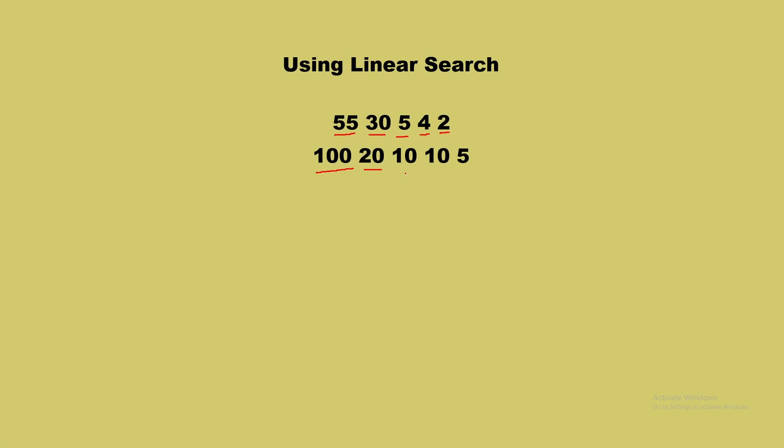A better approach comes from noticing that both arrays are sorted. Almost everyone knows that if an array is sorted, we can confidently apply binary search. In a sorted array, binary search finds an element in O(log n) time. So for each element in nums1, we can find its valid pair in nums2 using binary search.